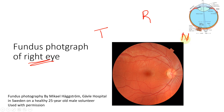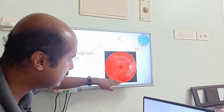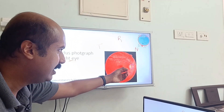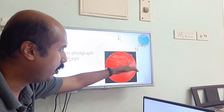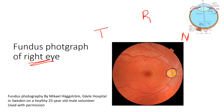In the right eye, the temporal aspect is on one side and the nasal aspect is on the other. On the nasal side you can see the most conspicuous feature of a fundus picture - the optic disc. The optic disc is where all these vessels are converging; all these vessels are entering or leaving from the optic disc.